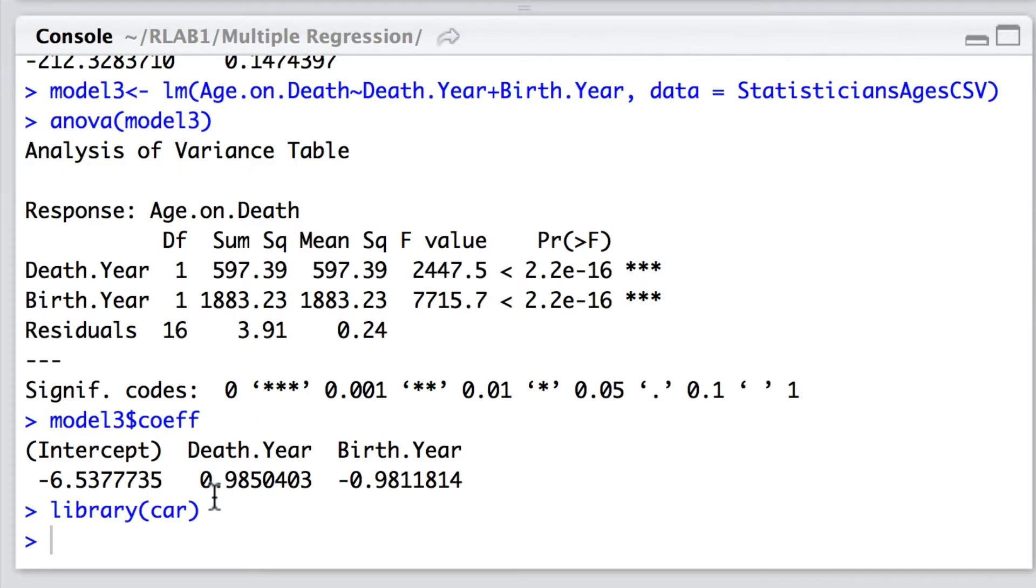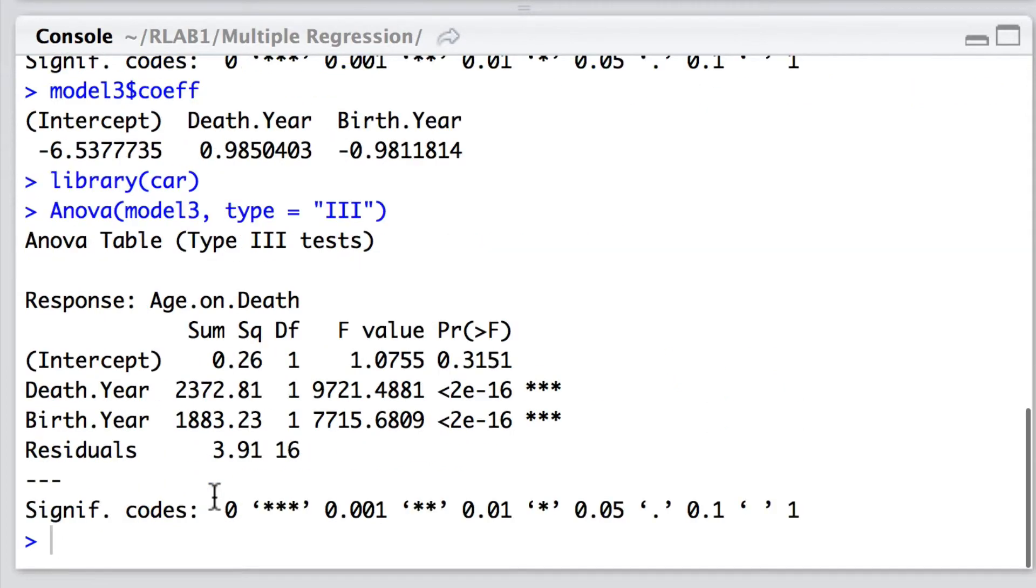Now I'm going to load the library car which has got a type 3 sum of squares and you remember a type 3 sum of squares simultaneously adjusts for the effects of all of the predictors in the model. So what we're going to do is with that model 3 that we have just fitted ask in this case for a type 3 sum of squares partitioning.